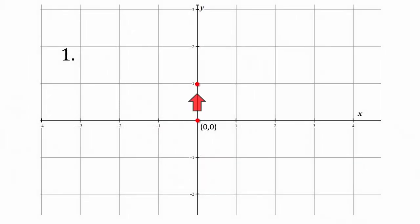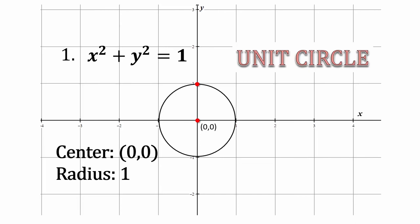For number 1, the center of the circle must be on the origin. The radius is 1 unit. This is the graph of x² + y² = 1. Did you know that x² + y² = 1 is the equation of the unit circle? You will encounter this type of circle in second grading of this subject.